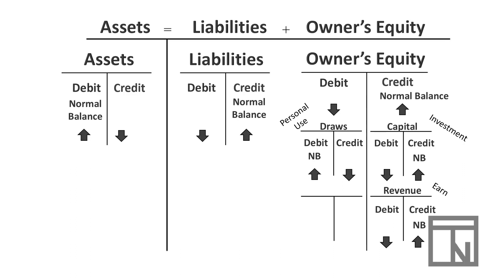Revenues are when a business earns money, and expenses are when it spends money. When the business spends money, that's less money that the owners have a right to, which is why expenses are on the decreasing or debit side of owner's equity. Just like draws, the more expenses we have, the less owner's equity we have. A debit balance increases expenses and credits make them decrease. That's why we say that expenses have a debit normal balance.